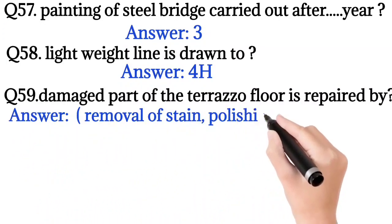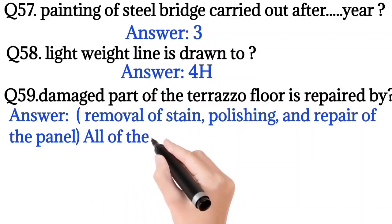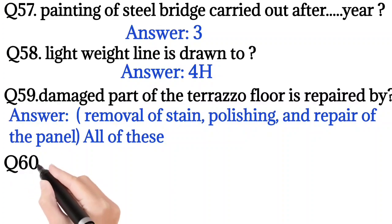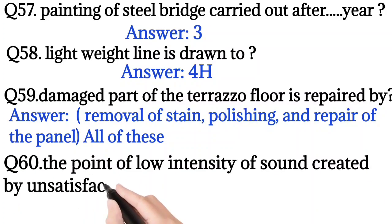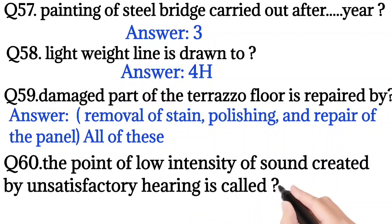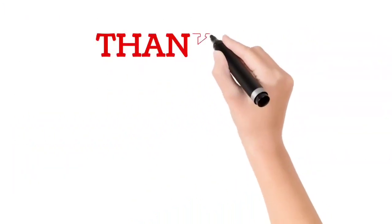So the answer is removal of stain, polishing, and repair of the panel - all of these options. Question number 60: The point of low intensity of sound created by unsatisfactory hearing is called? So the answer is none of these. Thank you for watching.